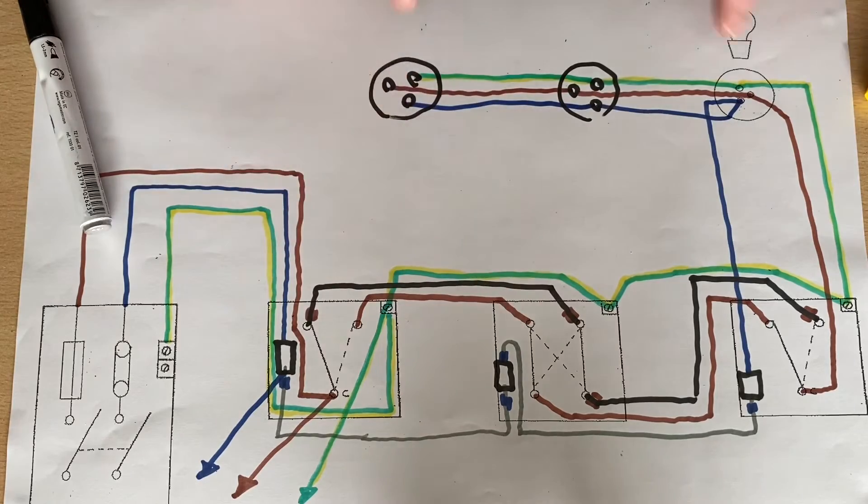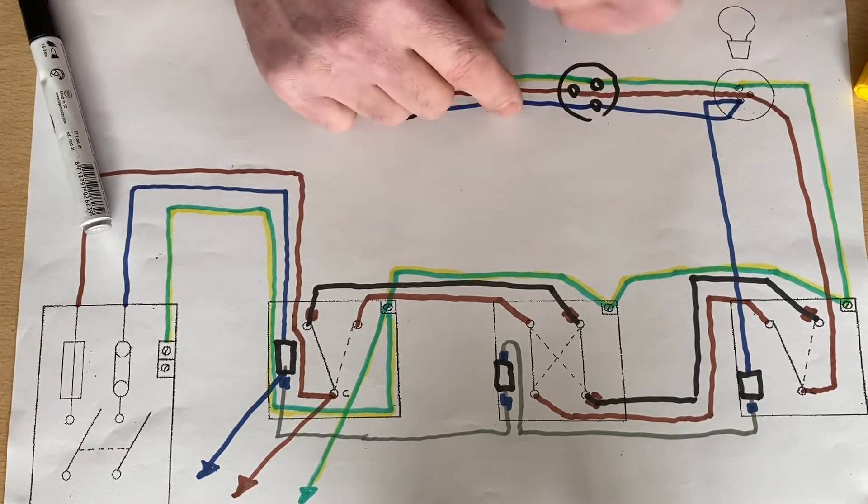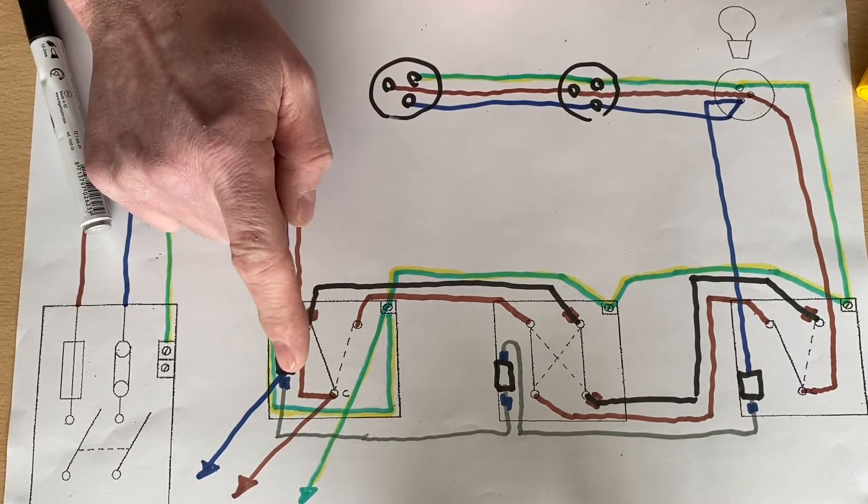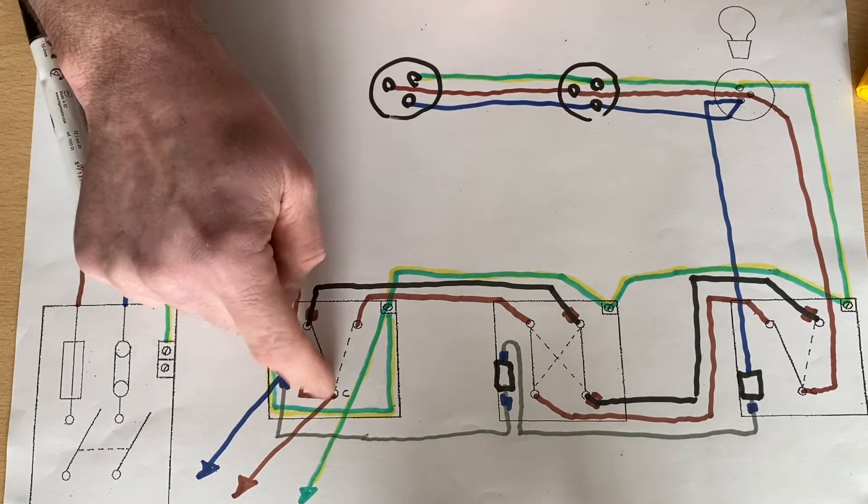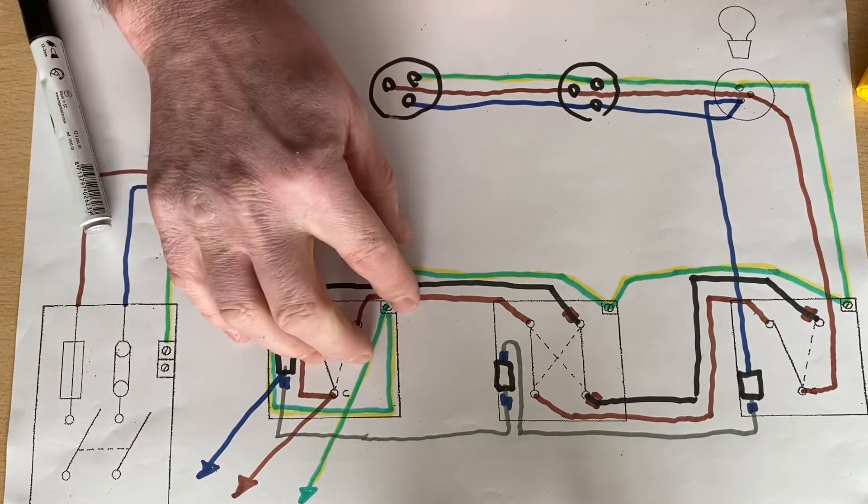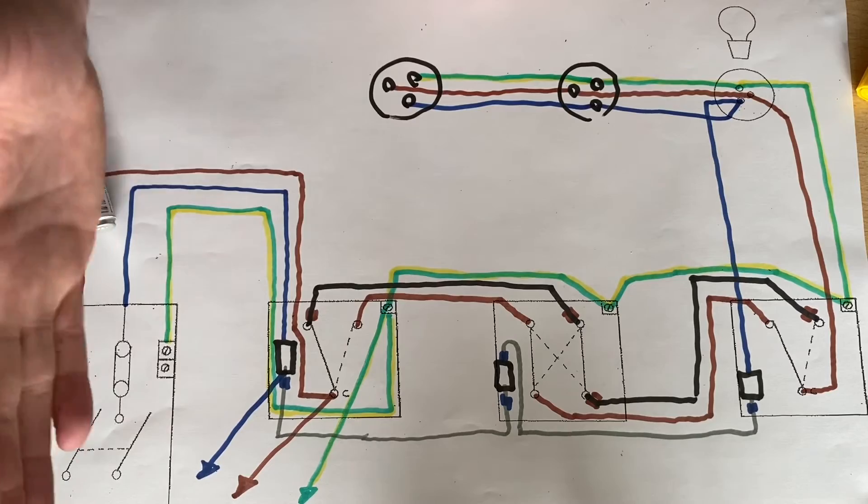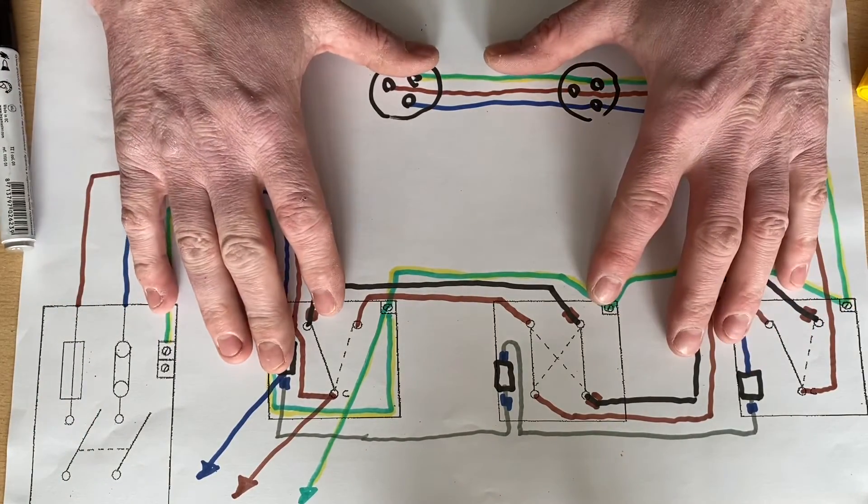So we bring it across and then we've got three down lights now connected to this switching sequence. We've got two-way and intermediate. In this case now we're controlling three lights. We've now worked out that we can take from our first two-way switch that has our permanent line, our neutral and the CPC, the supply over to the other area that you want to wire in using this method here.